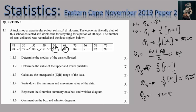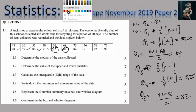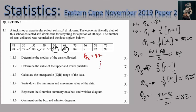Position 15 and 16 gives us 82 plus 82, all over 2, which is 82. So Q3 is equal to 82. To summarize: Q2 = 77, Q1 = 64, and Q3 = 82. Those are the two marks for question 1.2.